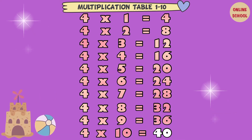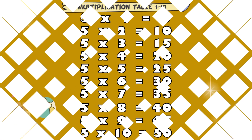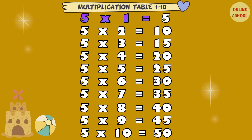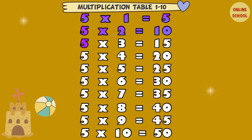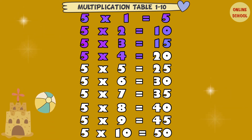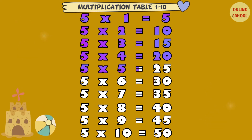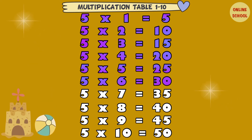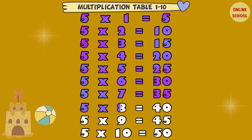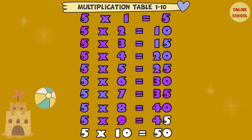4 x 10 equal 40. 5 x 1 equal 5. 5 x 2 equal 10. 5 x 3 equal 15. 5 x 4 equal 20. 5 x 5 equal 25. 5 x 6 equal 30. 5 x 7 equal 35. 5 x 8 equal 40. 5 x 9 equal 45. 5 x 10 equal 50.